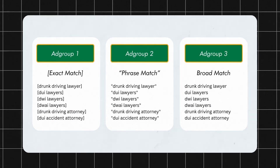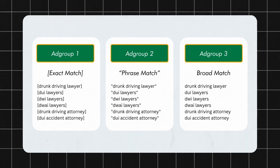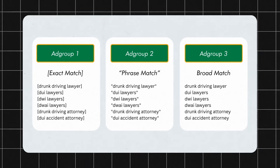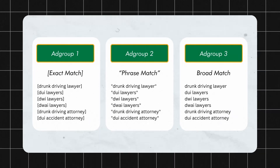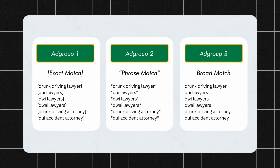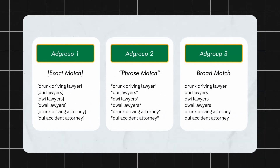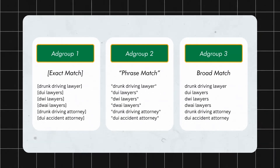For example, a common strategy for keywords and ad groups was to find all the keywords related to their products and services and then put them all together into three ad groups where the only difference is the match type. So ad group 1 would be all exact match, ad group 2 phrase match, and ad group 3 all broad match.